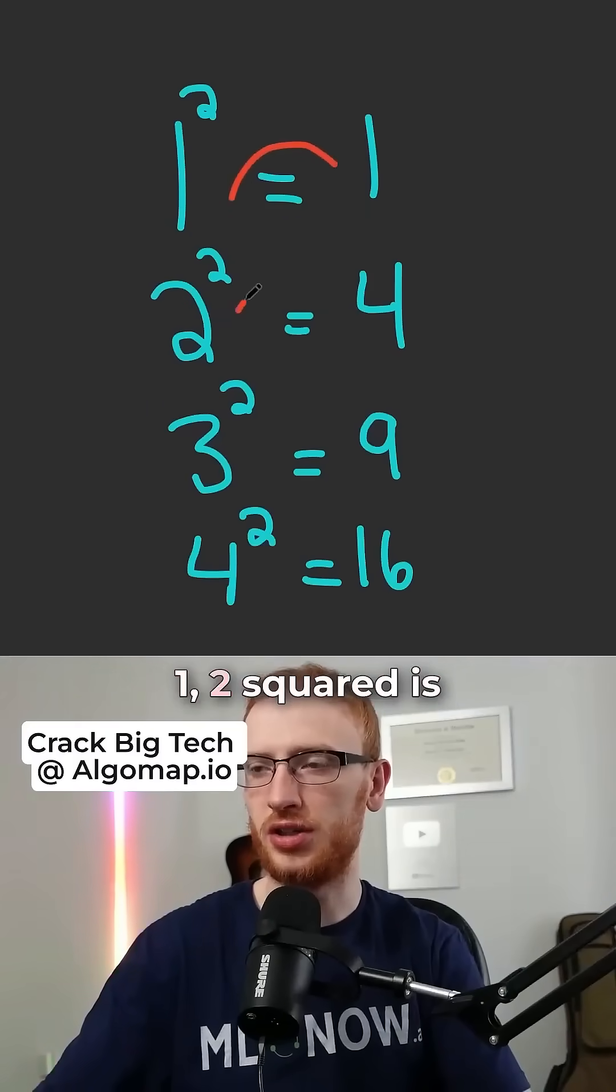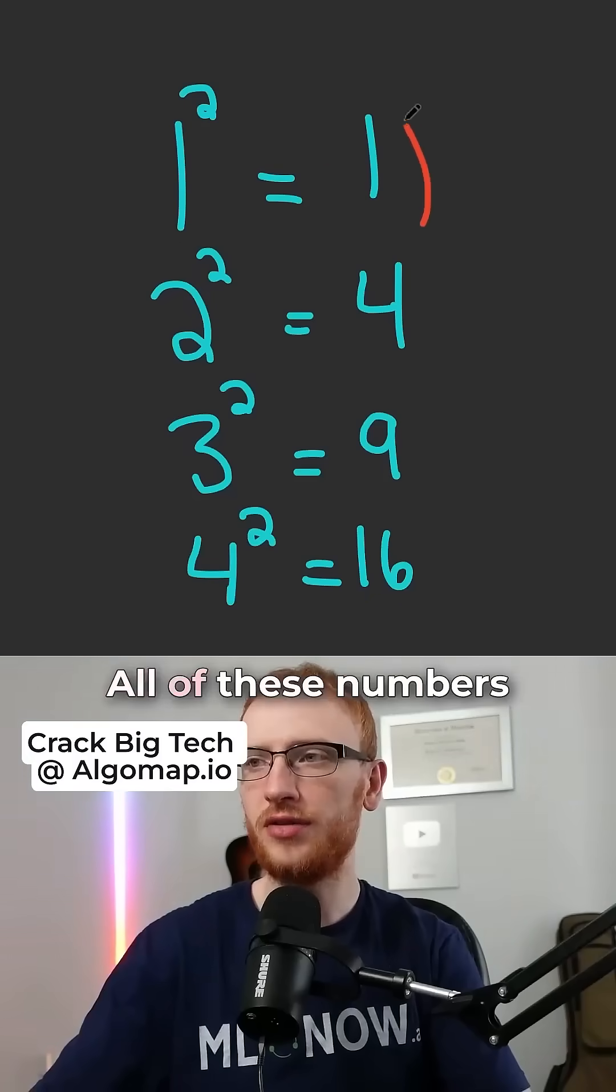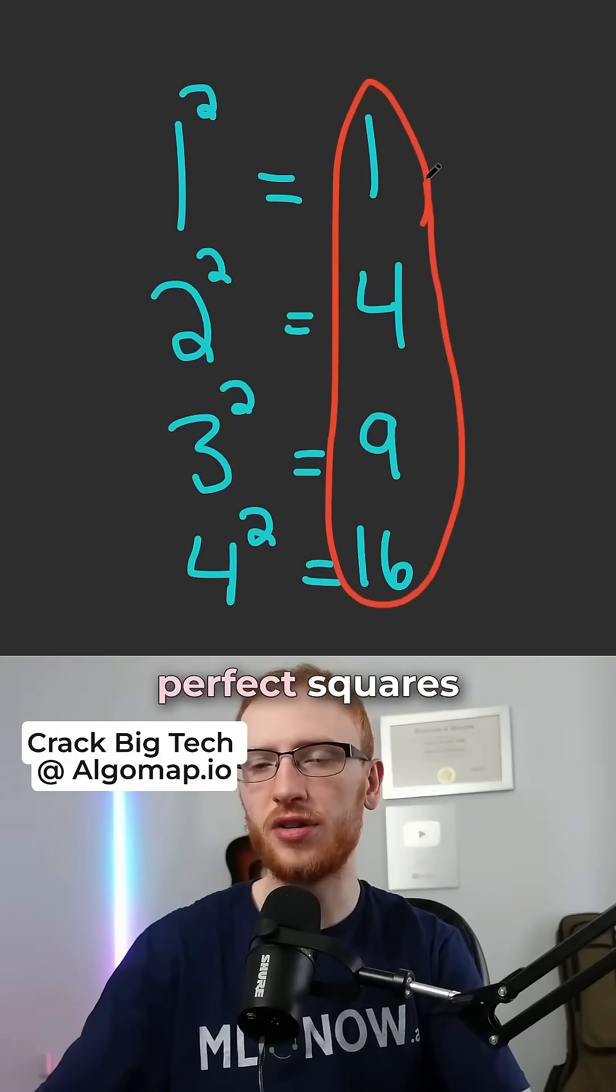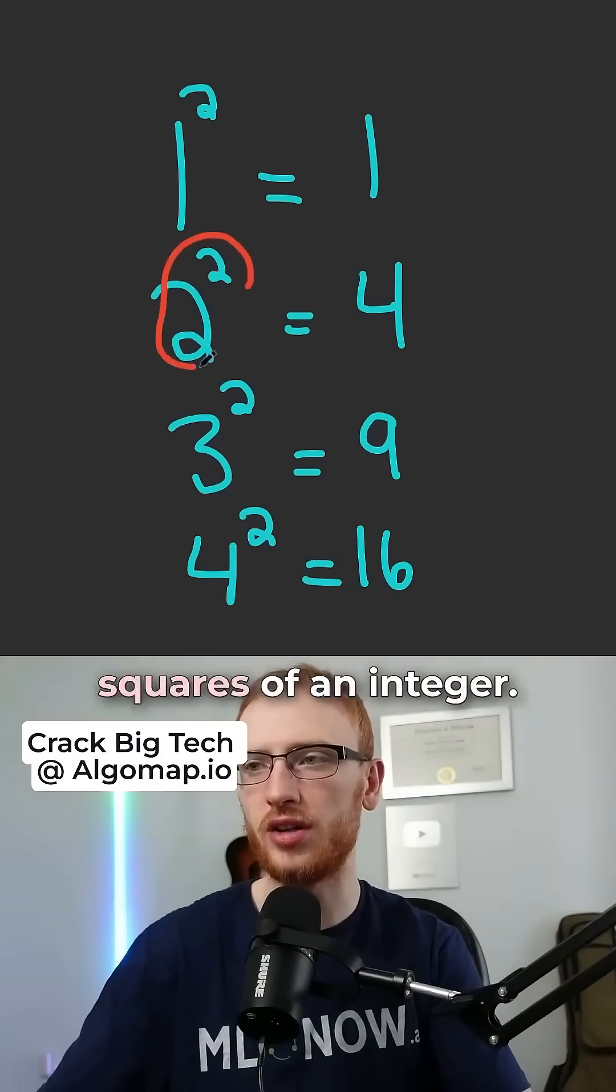So 1 squared is 1, 2 squared is 4, and so on. All of these numbers here are called perfect squares, because they are squares of an integer.